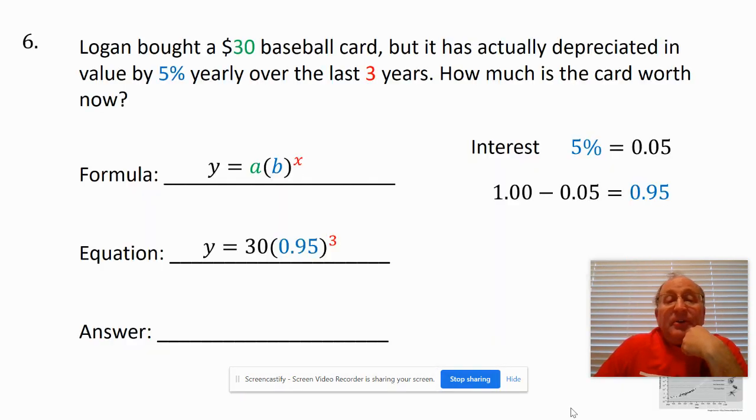Now I'm just going to plug everything in because my $30 is my starting place. So I'm going to take 30 times 0.95 to the third power, and it turns out to be $25.72.